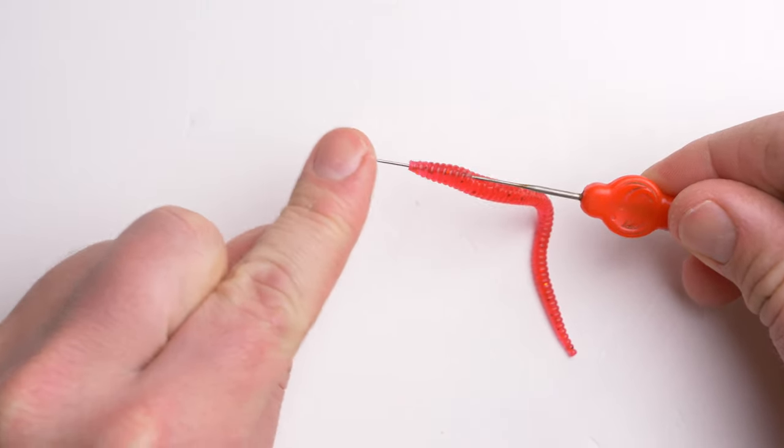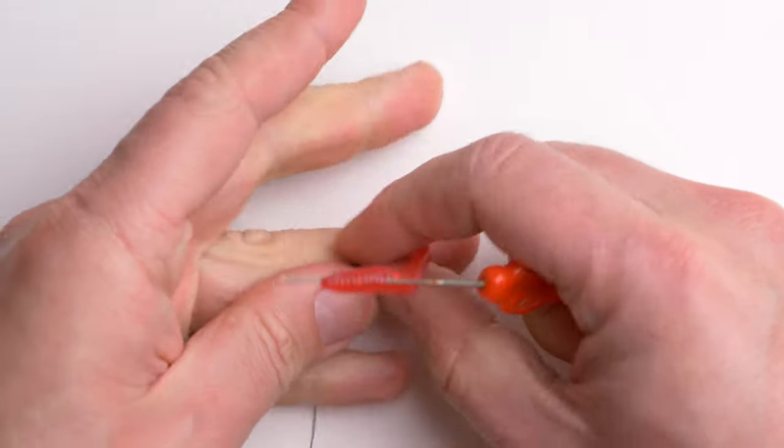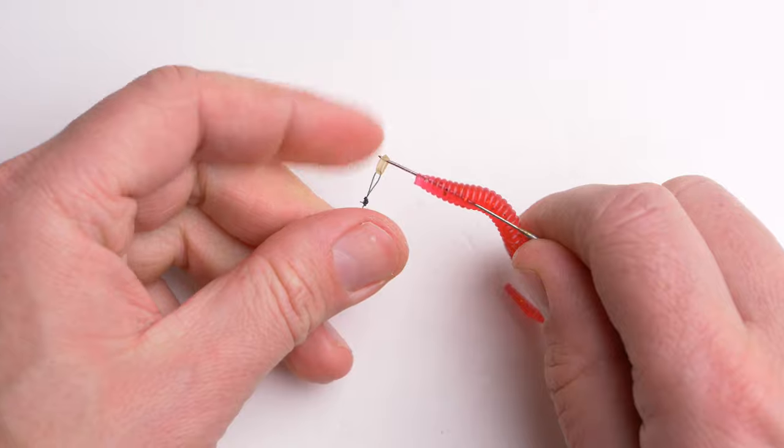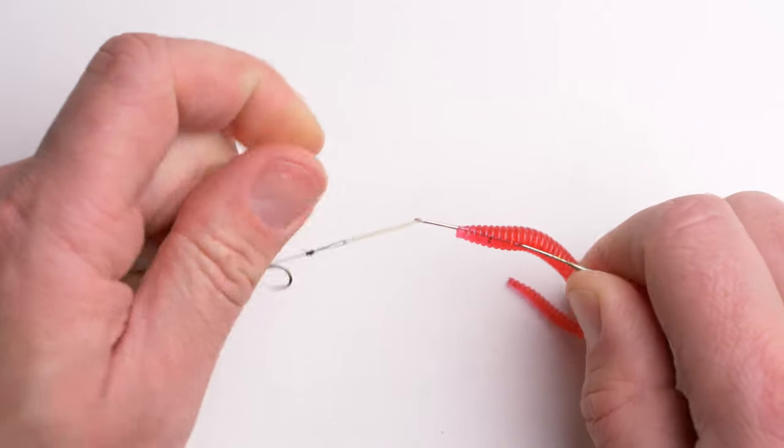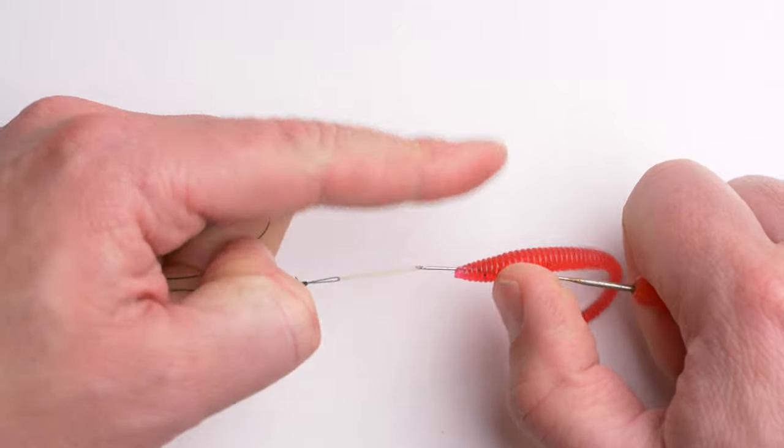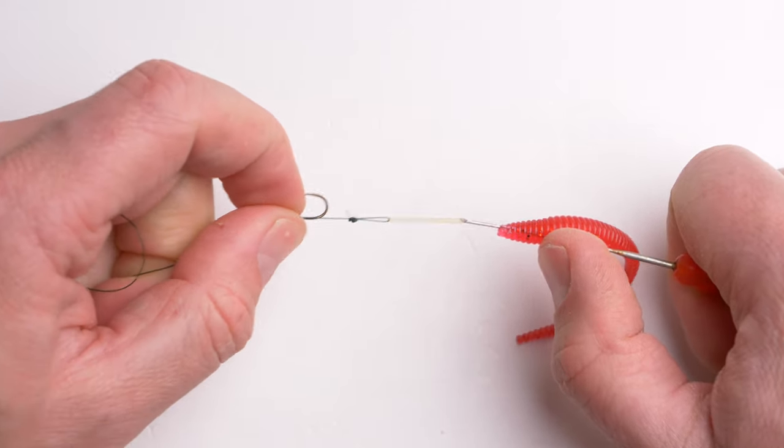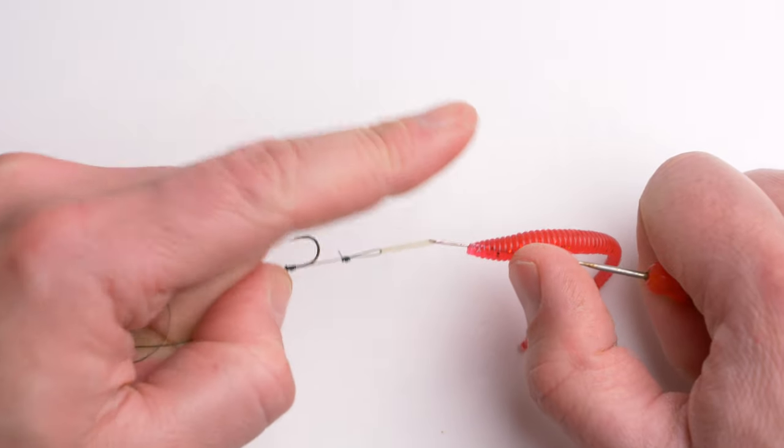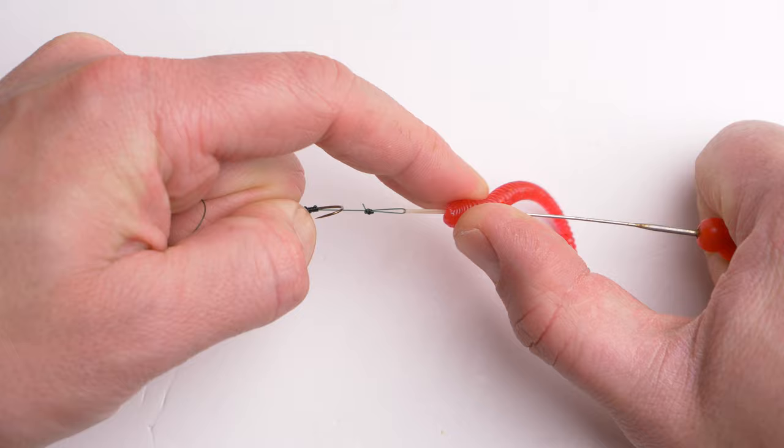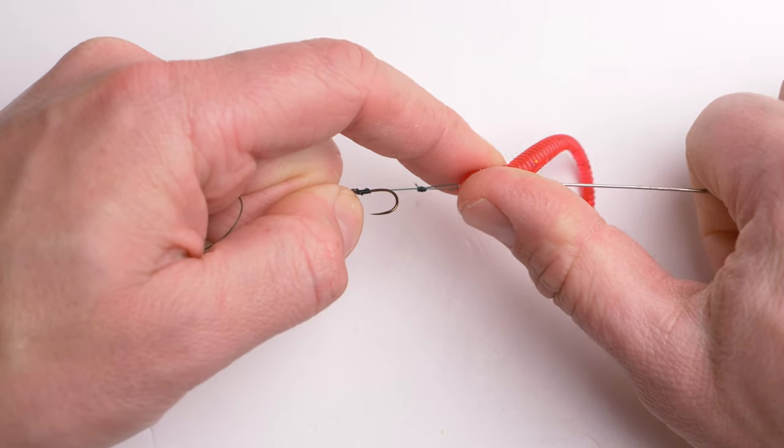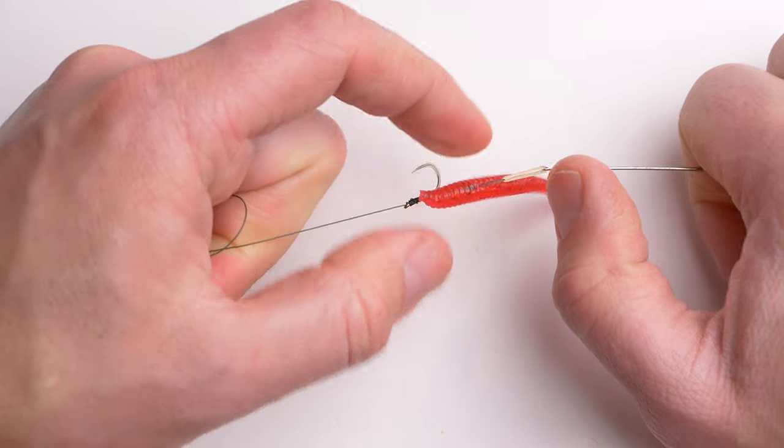The needle goes through the worm's head. Then hook the band into the needle and slide. You want to keep the band extended so it's lower in diameter. Then, while holding the band extended, pull the worm onto the hair.